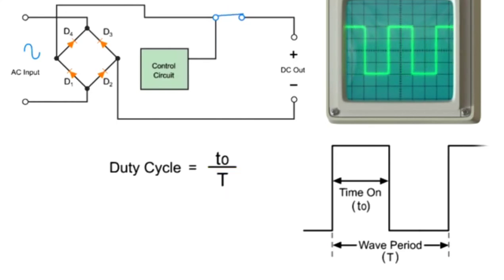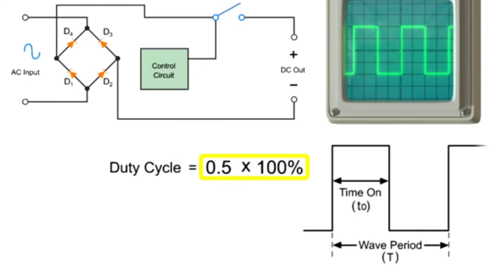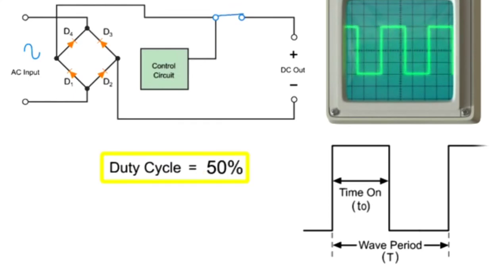Thus, if the period is 2 ms and the time on duration is 1 ms, then the duty cycle is 0.5. The voltage reduction will be 0.5 times 100% or 50%.